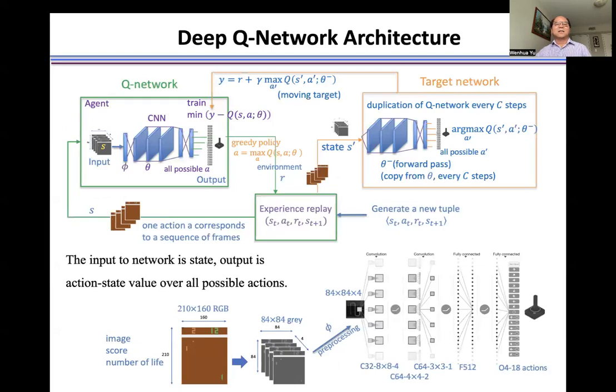Here is the architecture of the Q network, which includes two networks. So one is the Q network, one is the target network.